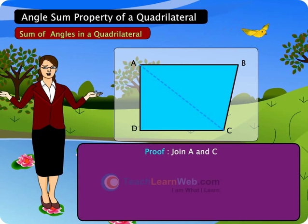Students, did you observe diagonal AC has divided the quadrilateral into two triangles?